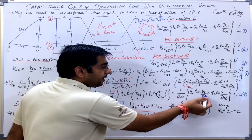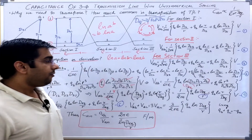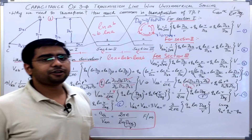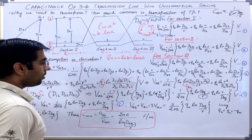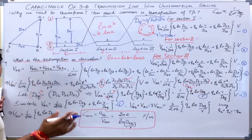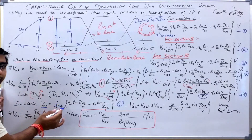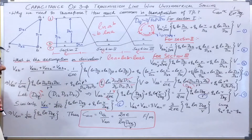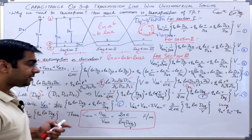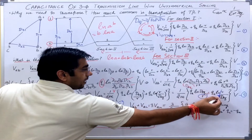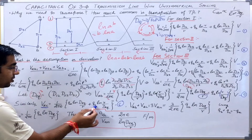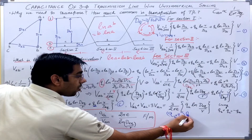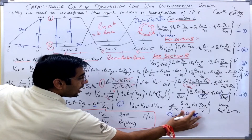The difference here is that we are using R — the actual radius of the conductor — whereas for inductance we used R′ (the modified radius). Similarly, I can write the expression for V_AC as: V_AC = 1/(2πε) · [Q_A·ln(D_eq/R) + Q_C·ln(R/D_eq)].